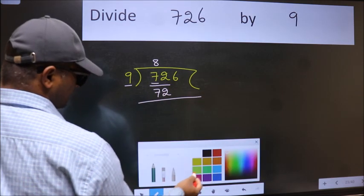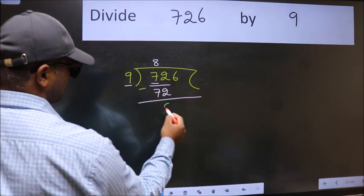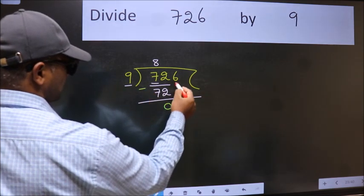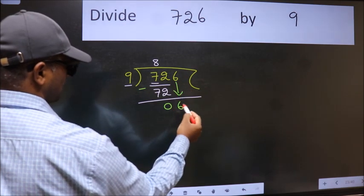Now we subtract and get 0. After this, bring down the next number. So 6 comes down.